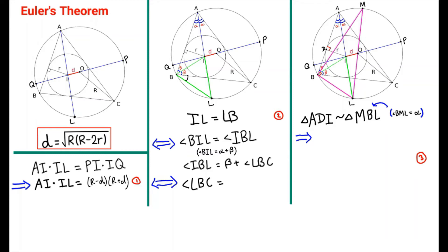We just have to prove that angle I-B-L equals alpha plus beta. Since we know one part of the angle is beta, we just need to prove angle L-B-C equals alpha. Since this angle directly subtends arc L-C, and alpha is also an inscribed angle subtending the same arc, these two angles are equal. Therefore angle L-B-C equals alpha, confirming the triangle is isosceles and I-L equals L-B.